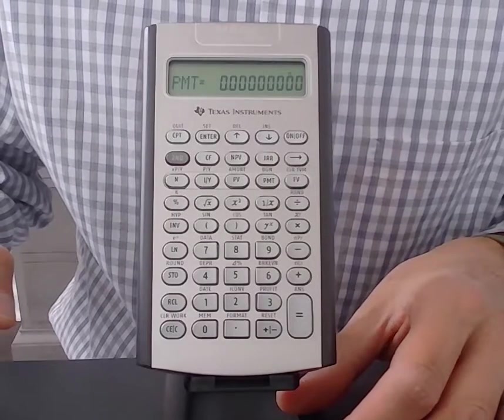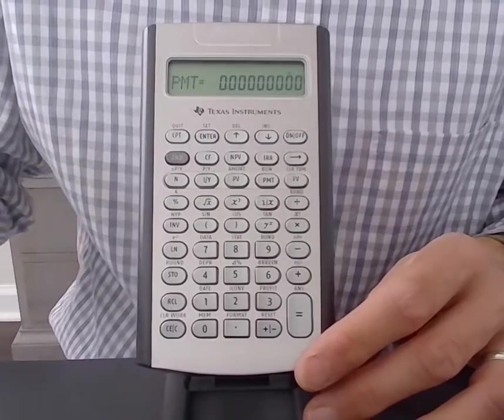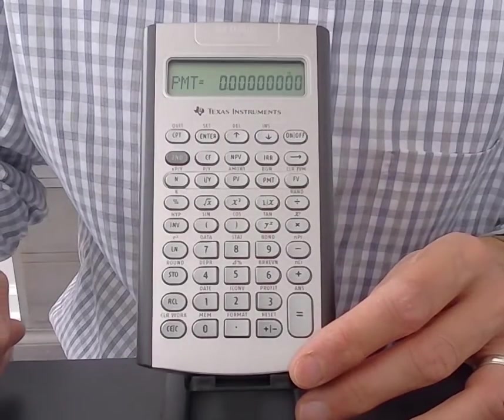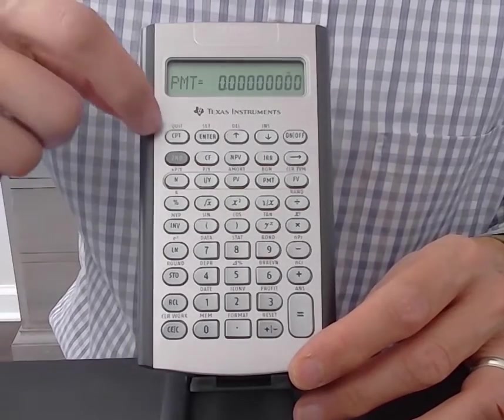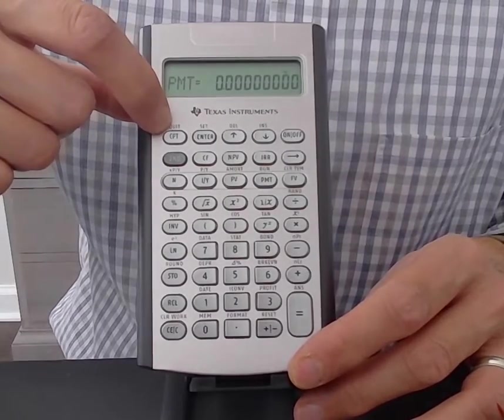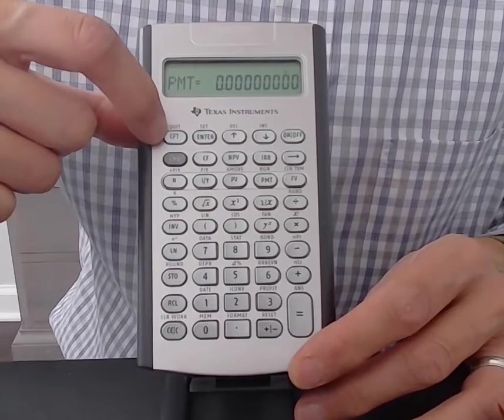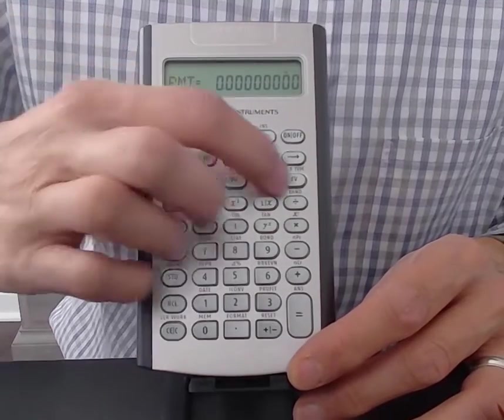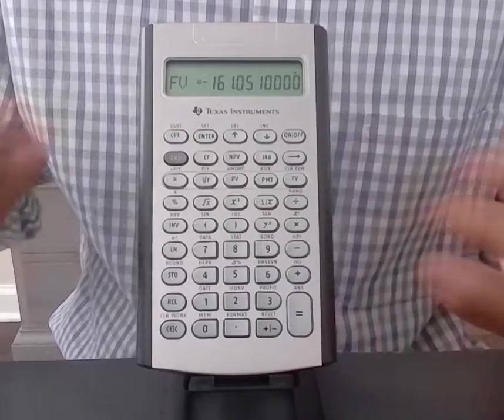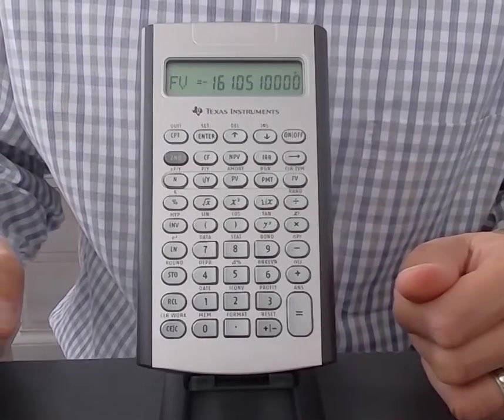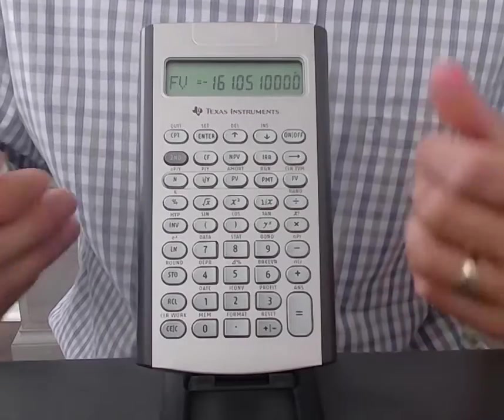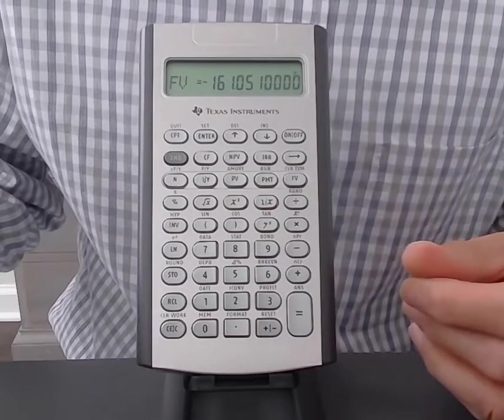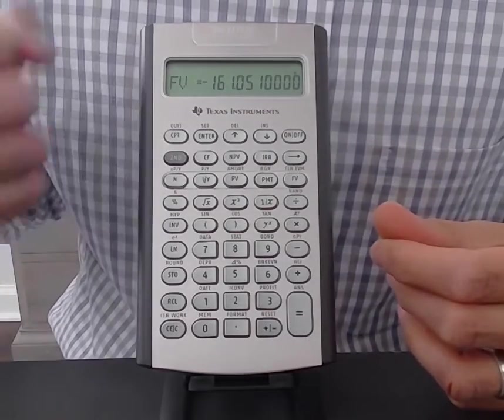And I'm solving for the future value. So how much I would have in my account in five years. So I'm going to use the FV button for future value, but I can't just press FV. I have to tell the calculator I want it to compute FV. So I'm going to press the CPT button for compute and then FV. And then it gives me the future value with a negative in front of it. So the future value of the $100 in five years at 10% is $161.05.